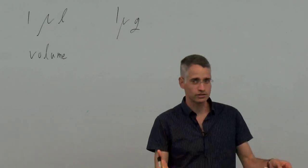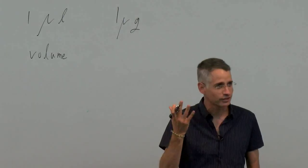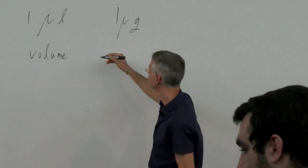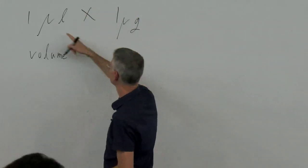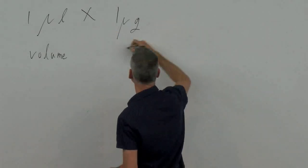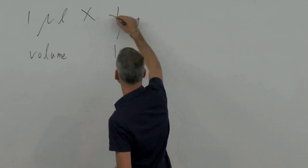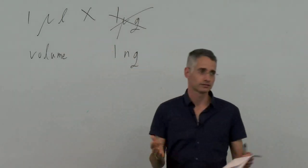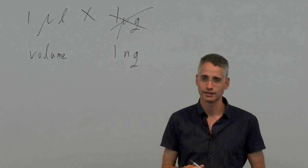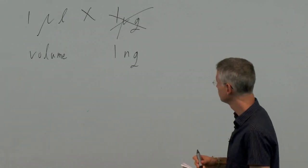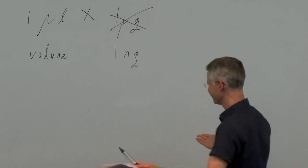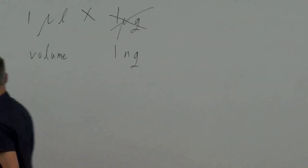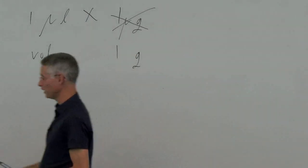The intuitive answer, and we could see it in the exercise, is to connect one microliter and one microgram, which is wrong. One microliter is actually one nanogram. Why is that? Because a liter... Actually, it's not a million? Yes, of course. So we have a factor of 1,000.